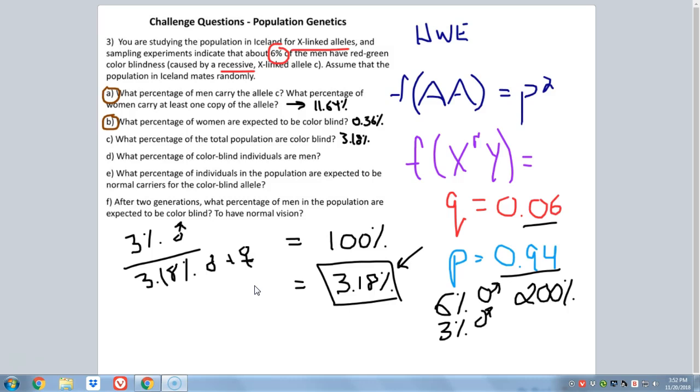So what percentage of the colorblind individuals are men? Well, 3% of the total 3.18% are the men. So if we simply do 3 divided by 3.18, we get a percentage of 94.3%. Of all the colorblind individuals in Iceland, 94.3% of them are men.